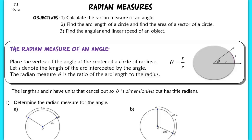This first lesson is an introduction to trigonometry. We're going to spend basically three different chapters studying trig functions, and what we're going to first talk about is radian measures. Our objectives for the day are to calculate radian measures for angles, calculate the arc length and area of a sector of circles, and find the angular and linear speeds of an object.